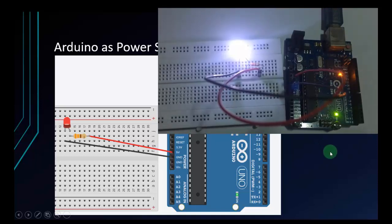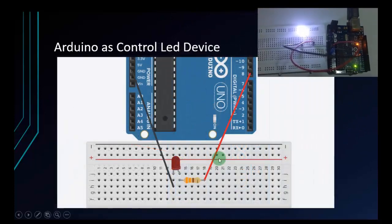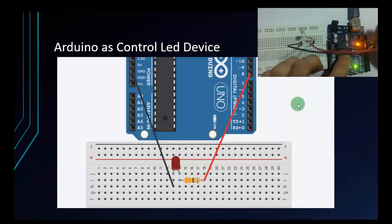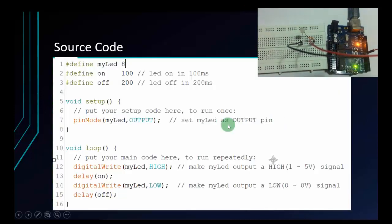Now we will write a program to control LED. So now we will program Arduino to control LED. I will change some pins right here. I will change the 5V pin to pin 8 of Arduino.